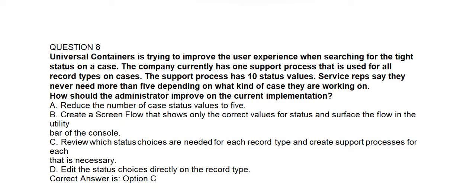Question number eight. Universal Containers is trying to improve the user experience when searching for the ticket status on a case. The company currently has one support process used for all record types on cases. The support process has changed status values. Service reps say they never need more than five depending on what kind of case they are working on. How should the administrator improve on the current implementation? Option A: Reduce the number of case status values to five. Option B: Create a screen flow that shows only the correct values for status and surface the flow in the utility bar. Option C: Review which status choices are needed for each record type and create support processes for each that is necessary. Option D: Edit the status choices directly on the record type. Correct answer is Option C.